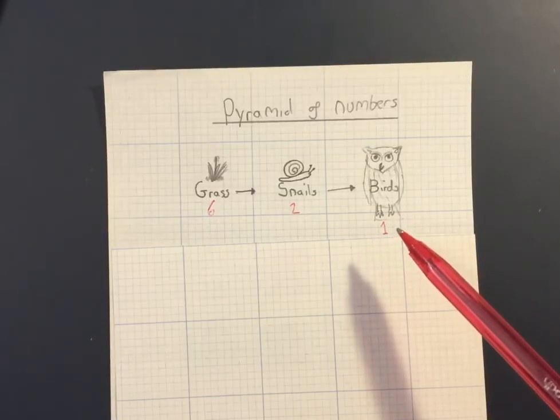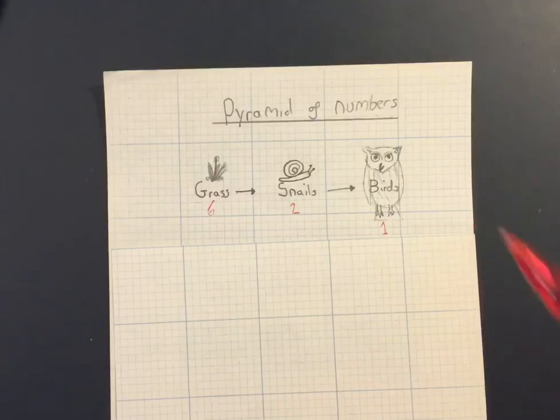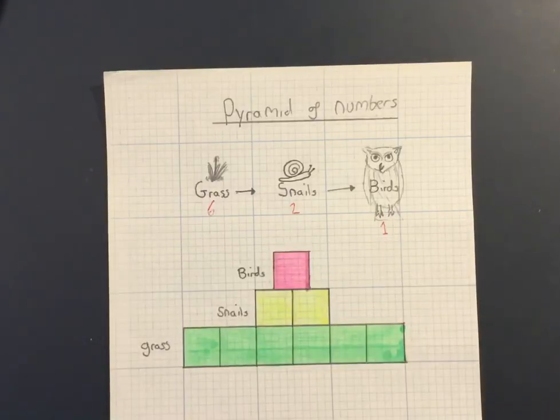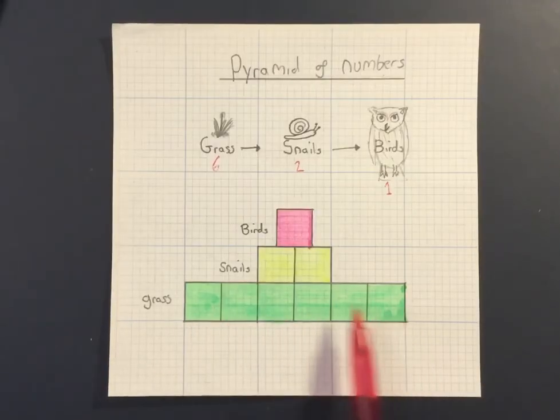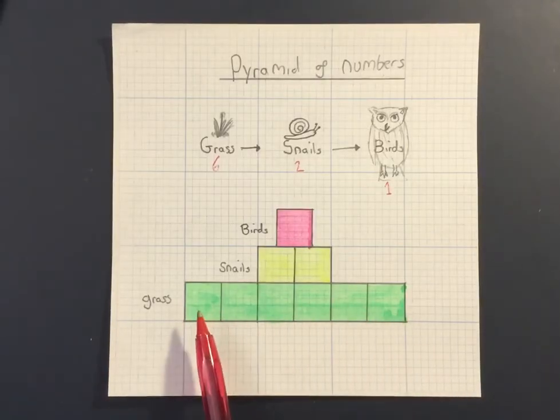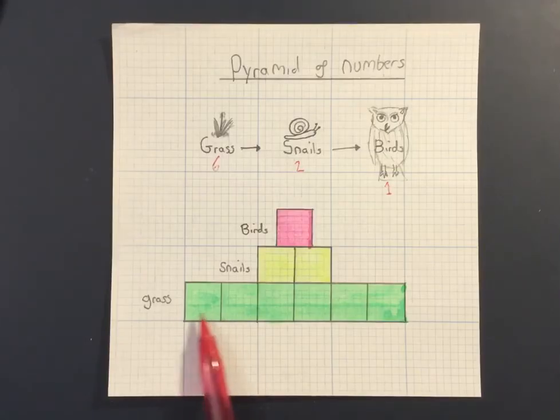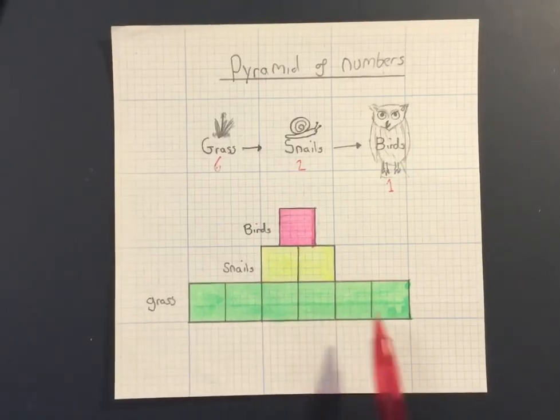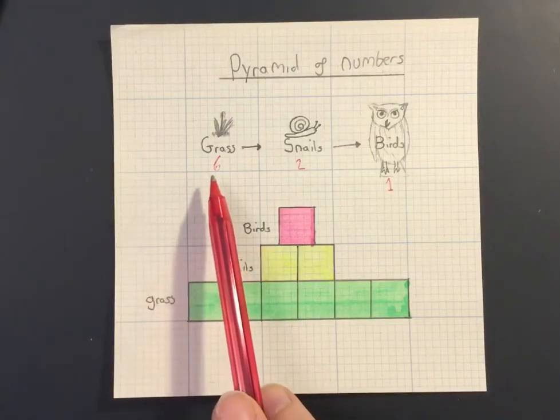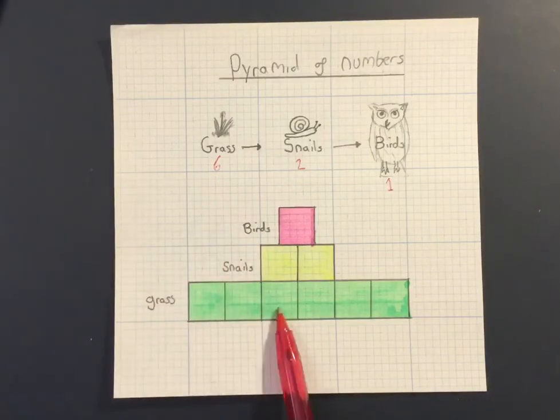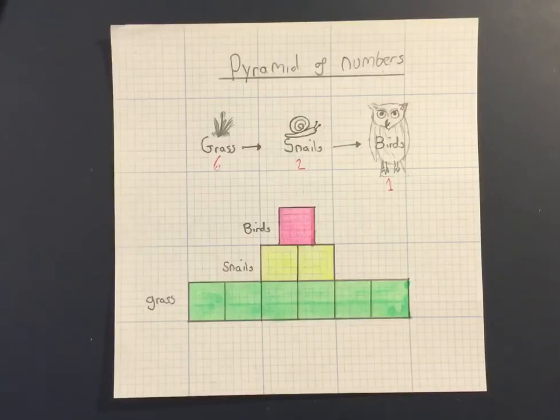And what we can do is we can draw a to-scale pyramid to show this. So what I've got here is that pyramid. At the bottom level, the bottom trophic level is our producer, and what you'll notice is it is to scale. There are six large squares here which correspond to the six grass, individual grass plants.